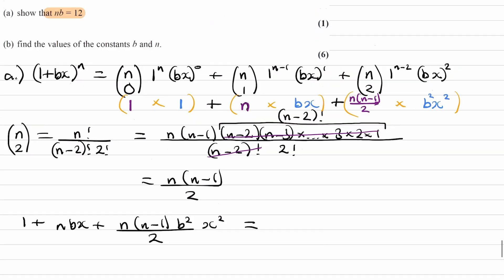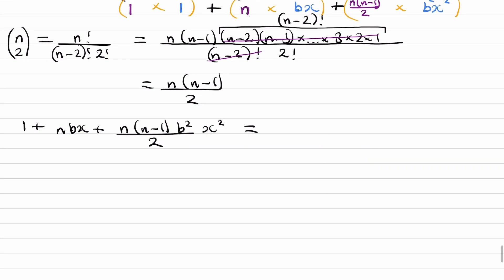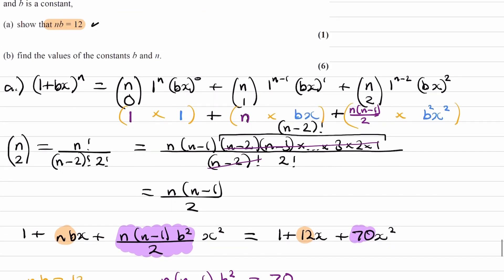We are told that the first three terms of our expansion are 1 plus 12x plus 70x squared. Equating coefficients: the coefficient of x gives nb equals 12, and the coefficient of x squared gives n times n minus 1 times b squared over 2 equals 70. So we can see that nb equals 12, which is exactly what we wanted to show for part a. Part a is now done.